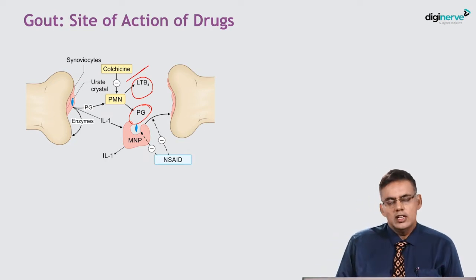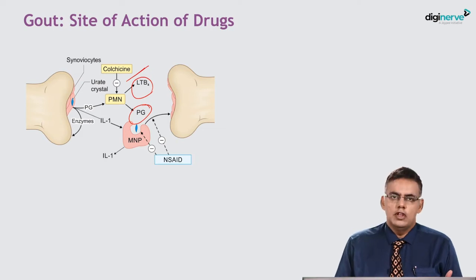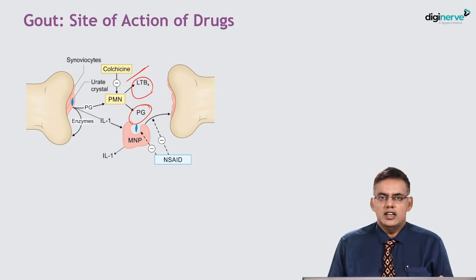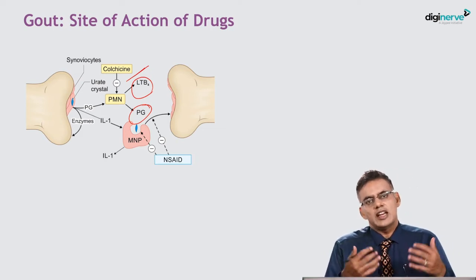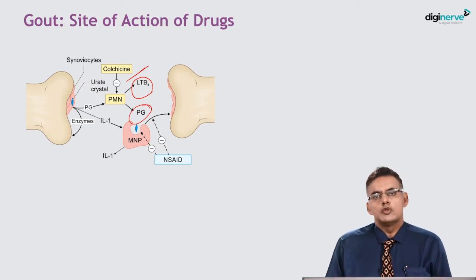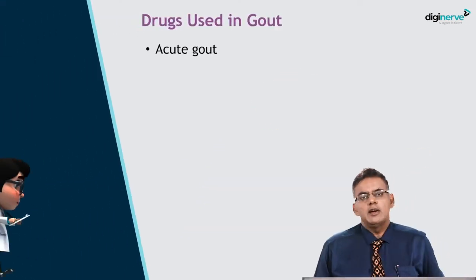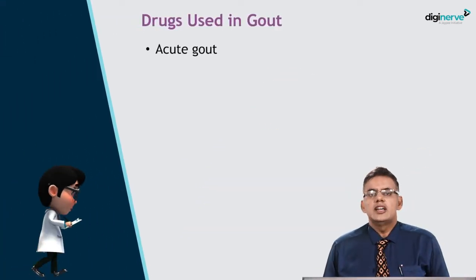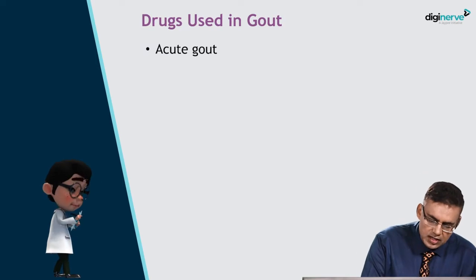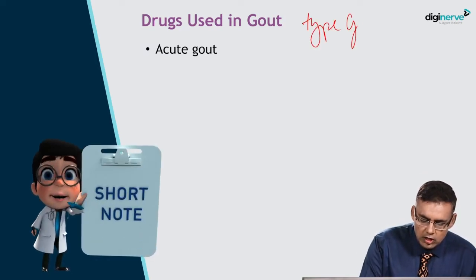Remember, we are also talking about the synthesis of uric acid. All drugs inhibiting the synthesis of uric acid would also be useful in the treatment of gout. The drugs useful in gout can be classified based on the type of gout — acute gout or chronic gout.